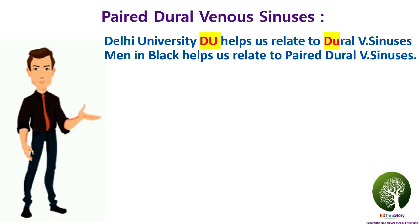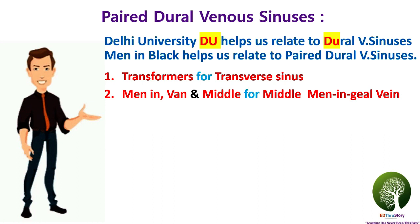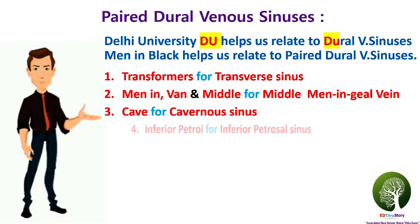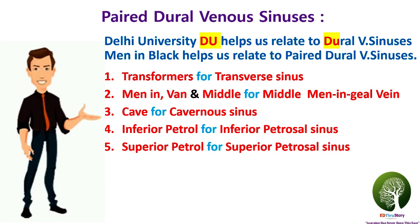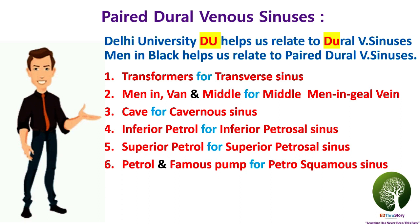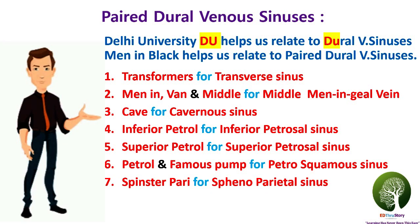Delhi University, abbreviated as DU, helps us relate to dural sinuses as it has the first two alphabets of 'dural.' Men in black is a solid clue for paired dural sinuses. Transformers helps us remember the transverse sinus. 'Men in' for meningeal and 'van' for vein — combining both with 'middle' gives us the middle meningeal vein. Cave for the cavernous sinus. Inferior and superior quality petrol for the inferior petrosal sinus and superior petrosal sinus. 'Famous' rhymes with 'squamous' — using petrol and famous we can remember the petrosquamous sinus. Spinster for 'spino' and Pari for 'parietal' — using both we remember the spinoparietal sinus. Sigma for the last paired sinus, the sigmoid sinus.